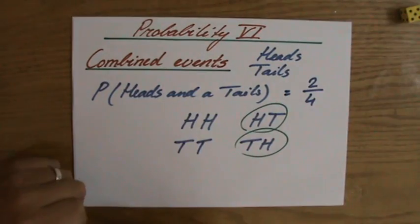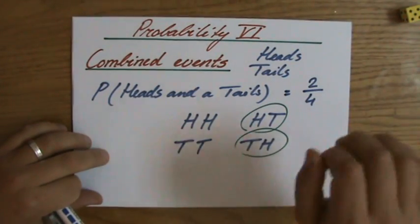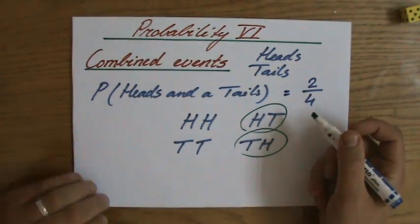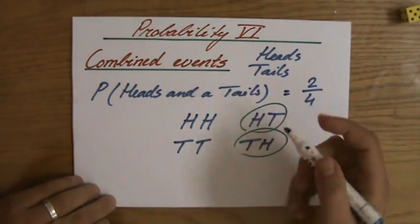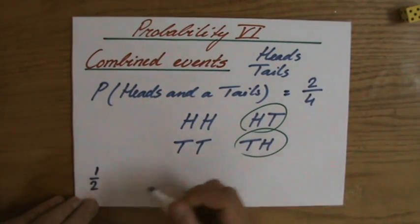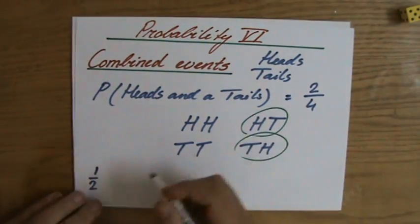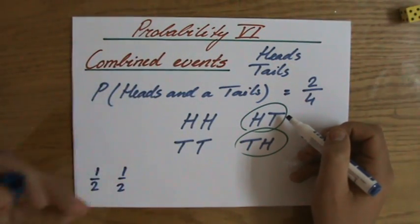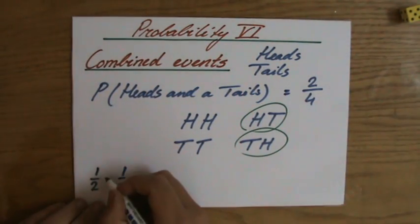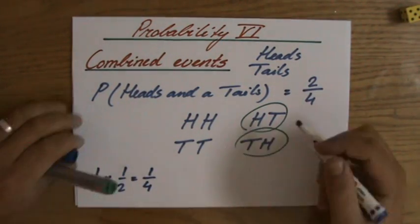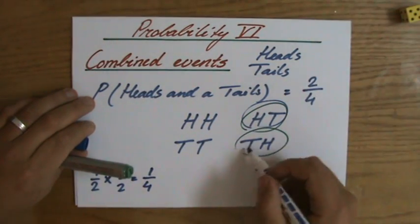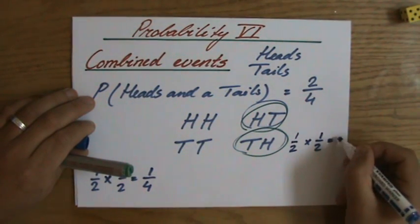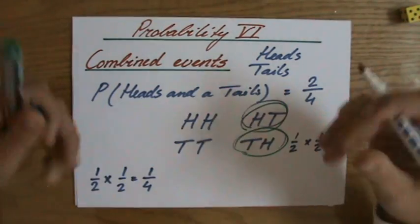Another way of looking at that — because in this particular case you don't have so many options — another way is by multiplying. What is the chance that you throw a heads first? Well, that chance is one over two. And then what is the chance of throwing a tails afterwards? That chance again is one over two. Because this is a combined event, the chance of throwing heads and then tails is one over two times one over two — so that is a chance of a quarter. To throw tails and then heads is also a chance of one over four, because you multiply those probabilities.